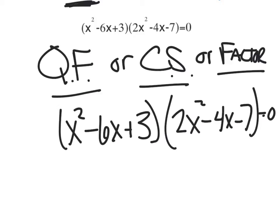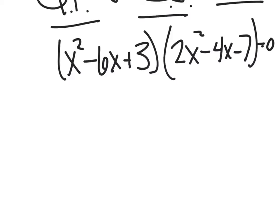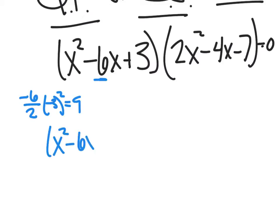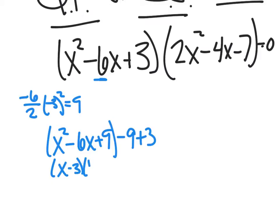When I look at this first term, the a value is 1 and the middle term is even, so I like to complete the square. Take that b term, cut it in half: negative 6 divided by 2 is negative 3, then square it to get 9. I add 9 and subtract 9, giving me (x - 3)² - 6.